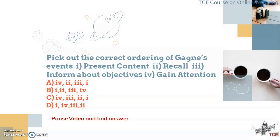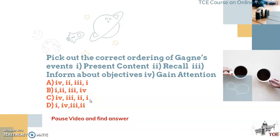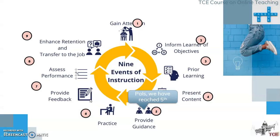We are now at our first interaction point. We have seen 4 events in Gagné's. I have given an arrangement of 1, 2, 3, and 4 — please determine which arrangement is correct. Pause your video and find the answer. The correct answer is: first is gaining attention, then informing about objectives, then recall, then present content — so the answer is 4, 3, 2, and 1. If you were wrong, please understand that this is the correct flow.